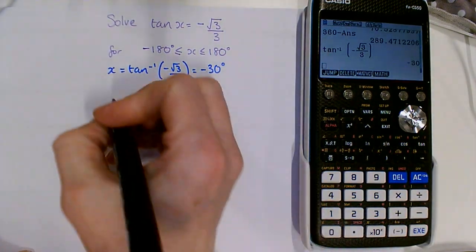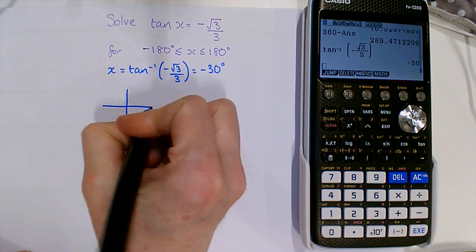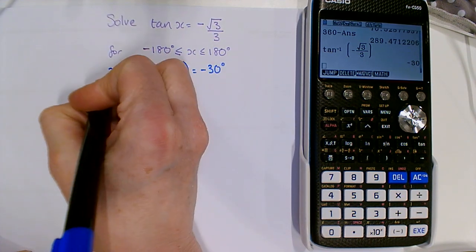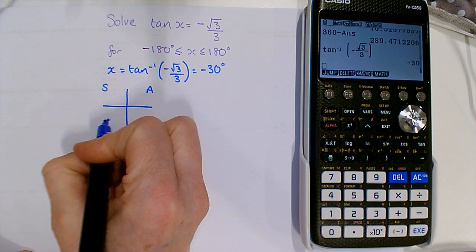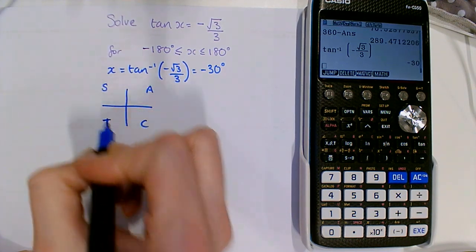So to get all of my answers, I'm going to draw my CAST diagram. Remember that the letter stands for the trig ratio that is positive in that quadrant.